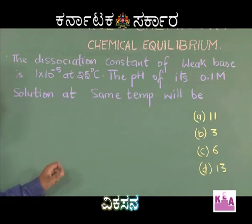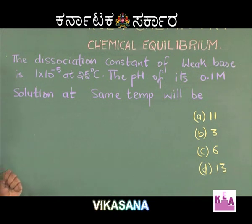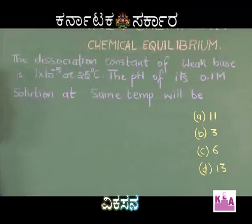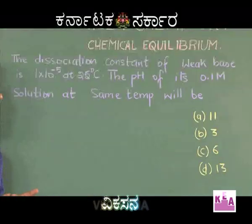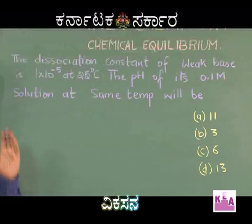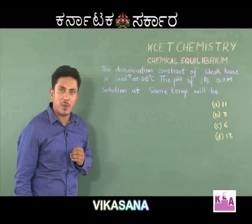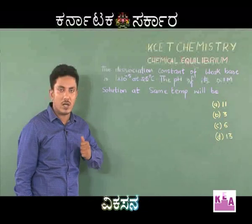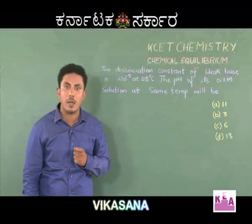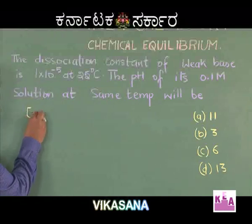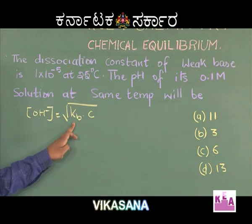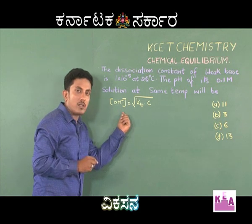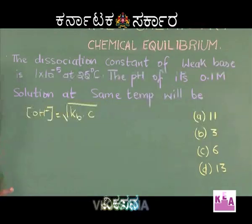A weak base is given and we must calculate the pH. For a weak base, the OH⁻ ion concentration is not equal to the given concentration because the weak base does not dissociate completely. The OH⁻ ion concentration should be calculated using either c·α or √(Kb × c). Since the dissociation constant Kb is given, OH⁻ = √(Kb × c).